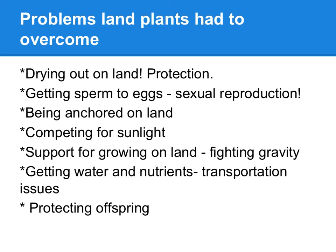Hopefully you came up with some of these. First of all, just drying out on land would be one problem — they need some protection from that. Being able to reproduce: plants can't move, so getting sperm to the eggs would require some help because they can't float; they're anchored on land. They need to stay anchored so wind doesn't blow them over. They have to compete for sunlight, need structural support because they're fighting gravity, need to get water and nutrients, and need to protect their offspring. By the end of the screencast, hopefully you can point to the adaptations plants have to overcome these problems.